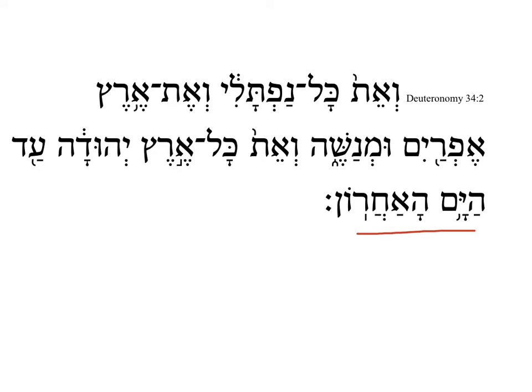HaYam HaAcharon — the sea which is behind — refers to the Mediterranean Sea. In the ancient world, east is front. Jerusalem is the center of the universe in the Bible, and so from the perspective of Jerusalem facing east frontward, the Mediterranean Sea is behind that orientation. So the sea which is behind refers to the Mediterranean Sea.